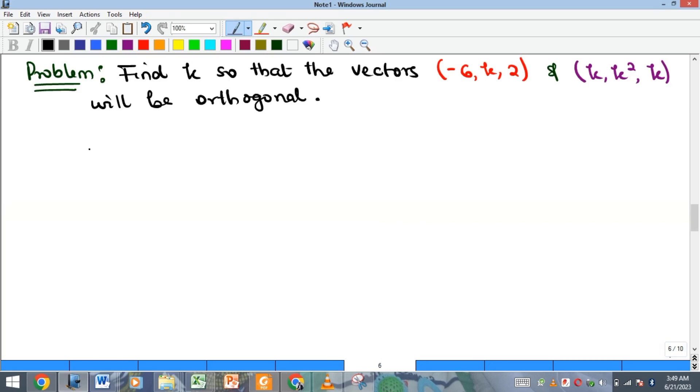Okay, so to look at this problem, it says we should find k such that the vectors given here, the two of them, will be orthogonal. We recall orthogonal vectors and...